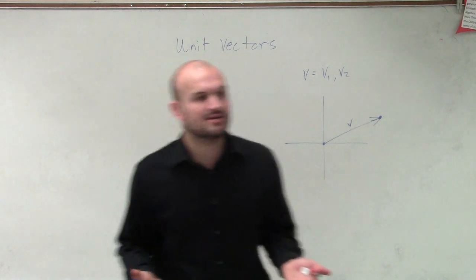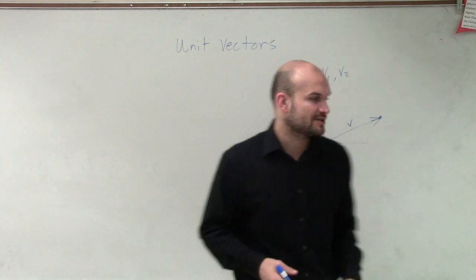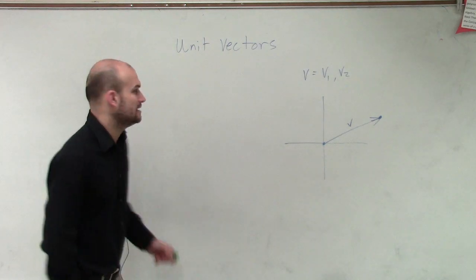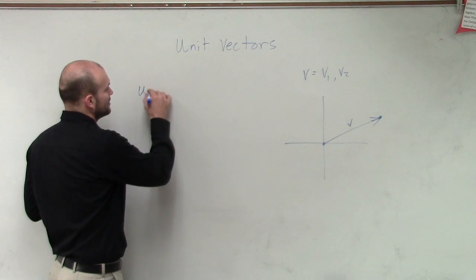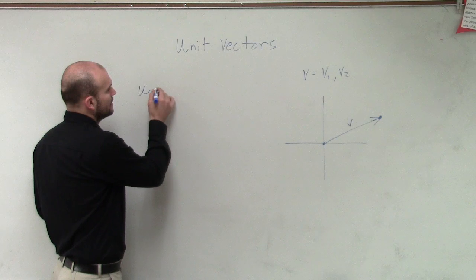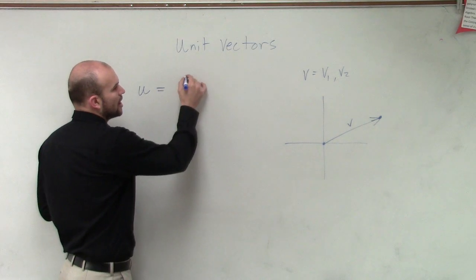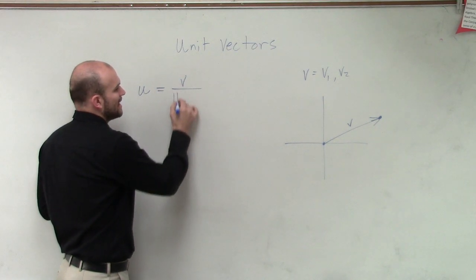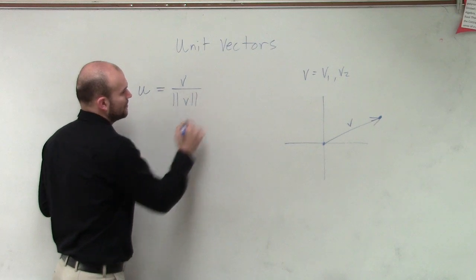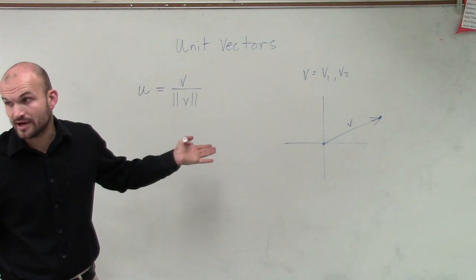So one way that we can help that out is finding what we call the unit vector. So if I have a vector v, our unit vector, which we'll denote as u, is simply going to be our vector v divided by the magnitude of v. Now remember, we know how to find the magnitude of v.